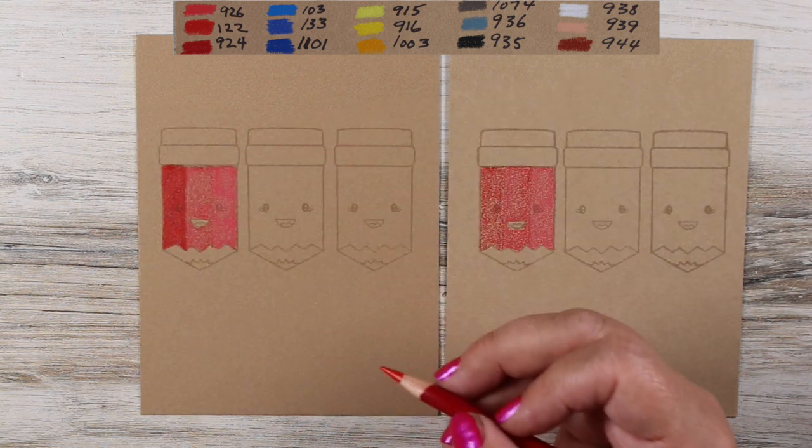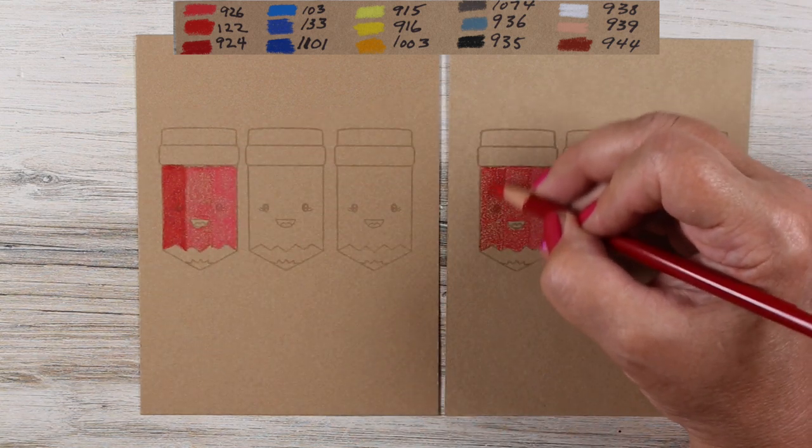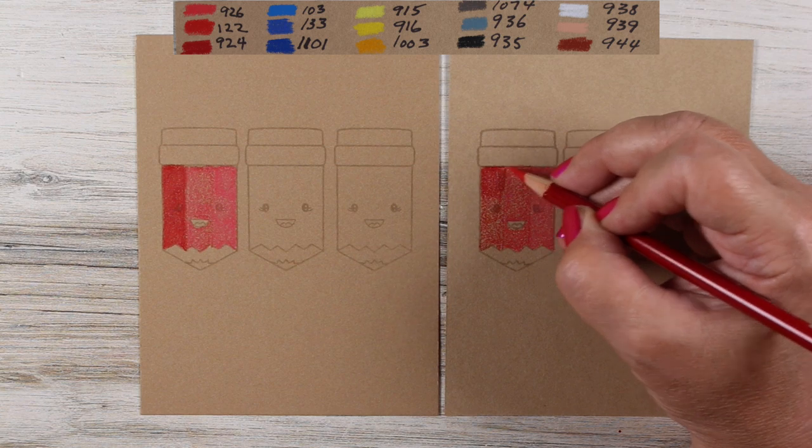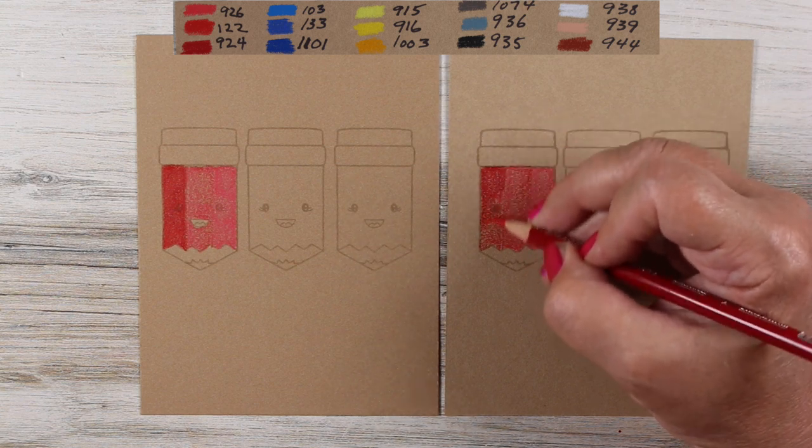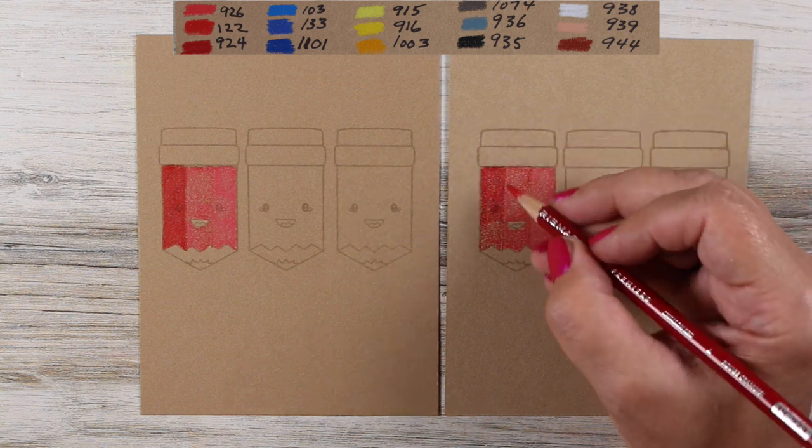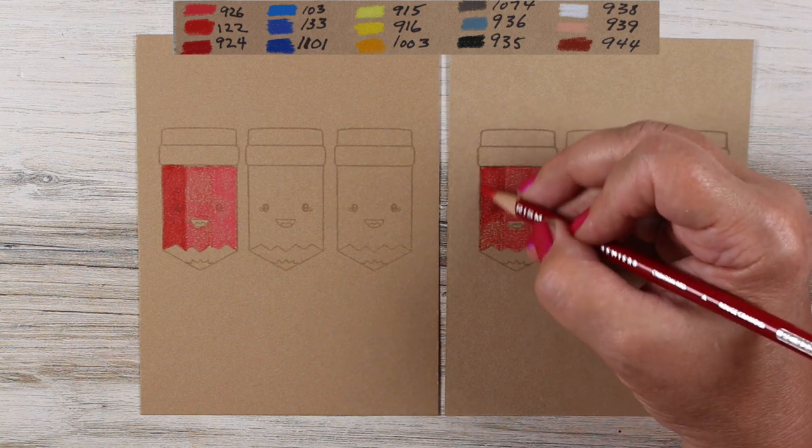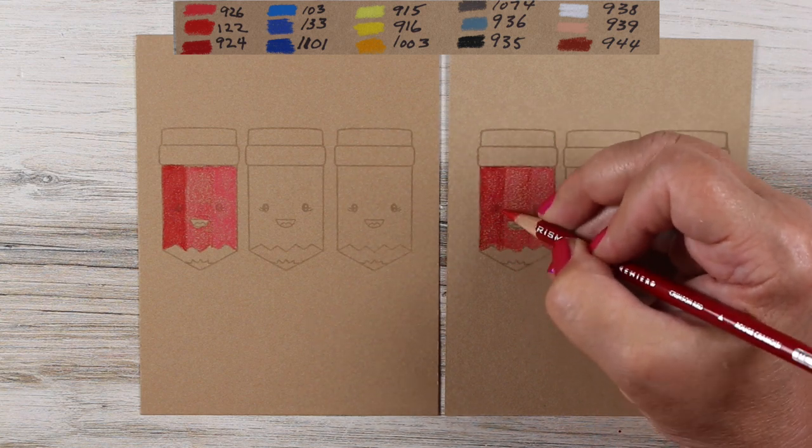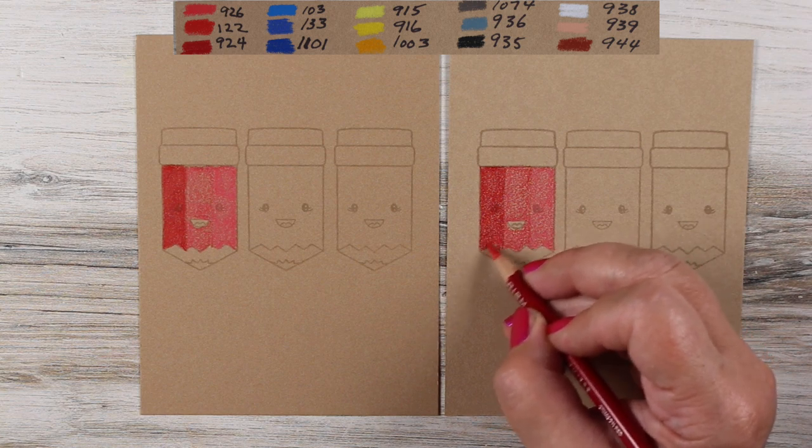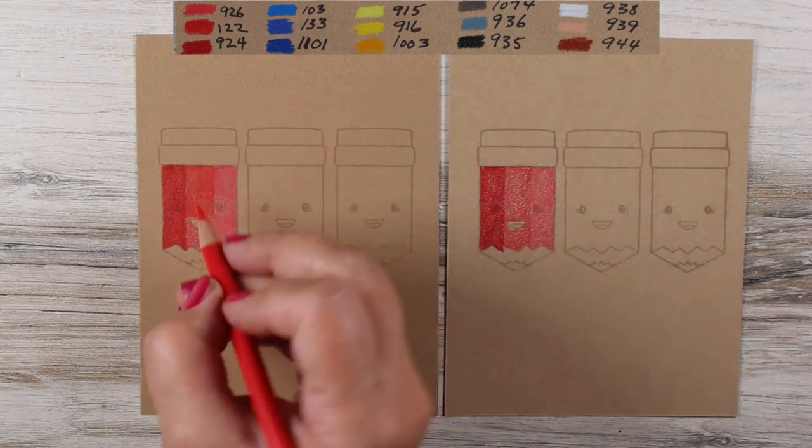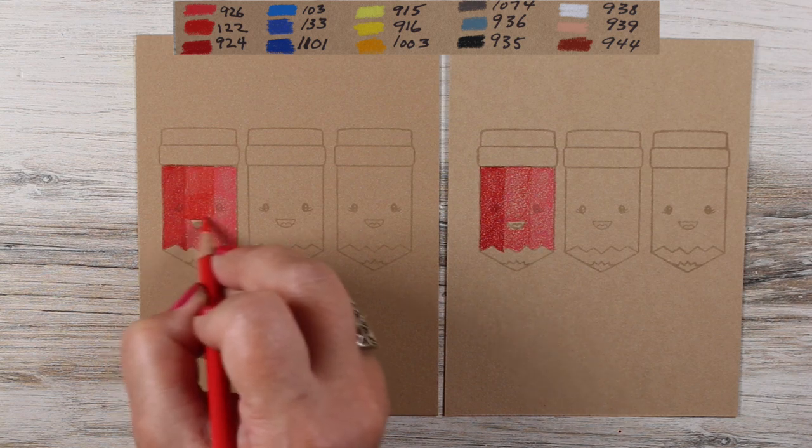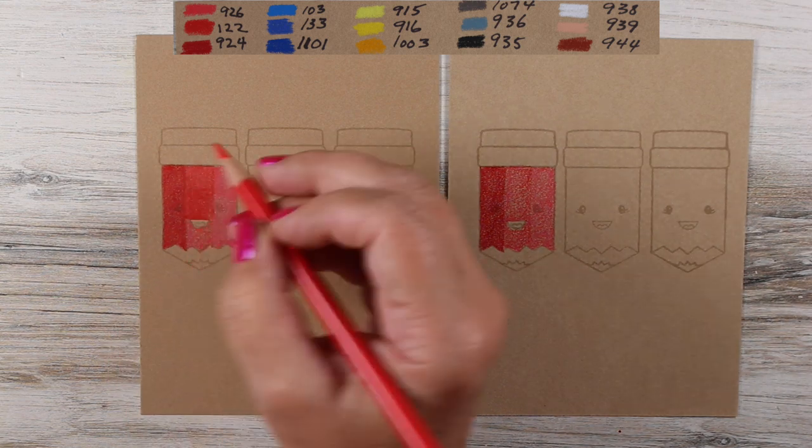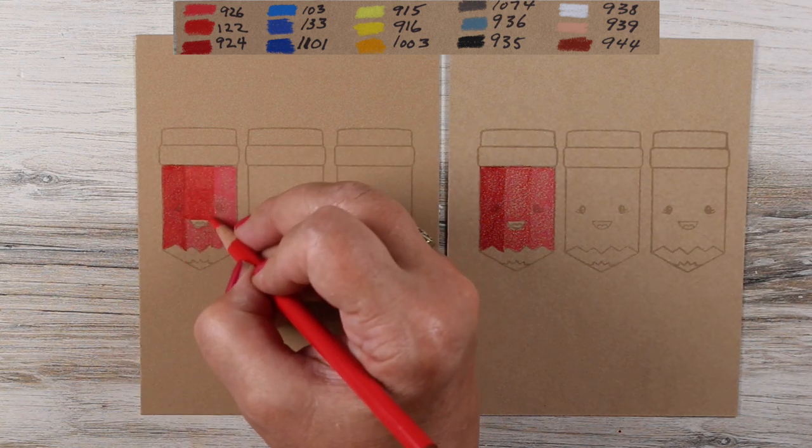That tends to hold the pencil really nicely. It pulls enough pigment off of the pencil itself, but it also doesn't create extra texture by being too textured. If you picture a mountain range and you're coloring across the top, you want the pigment to go down into the valleys, not just sit on the tops of the mountains.